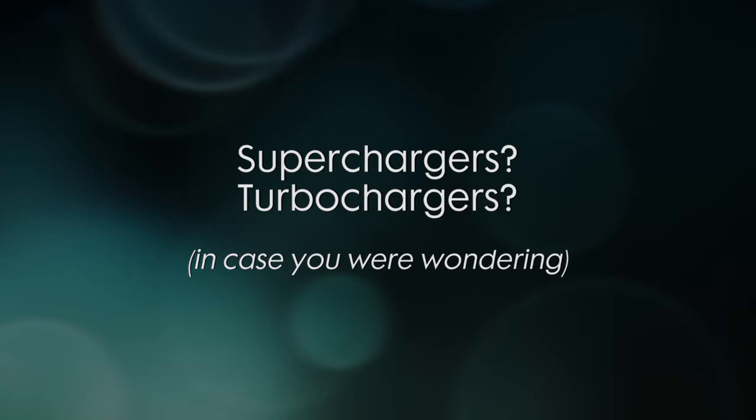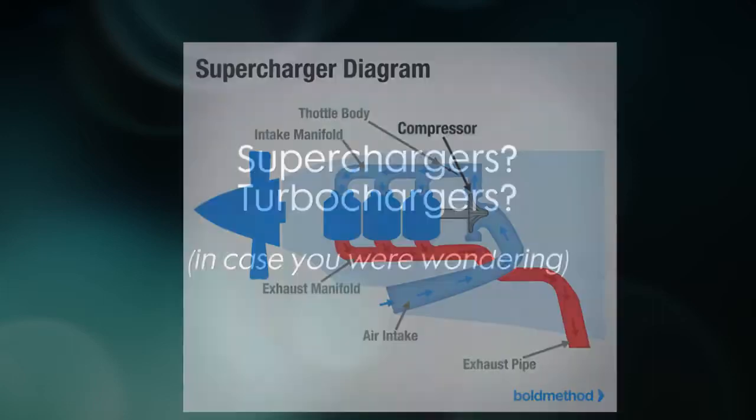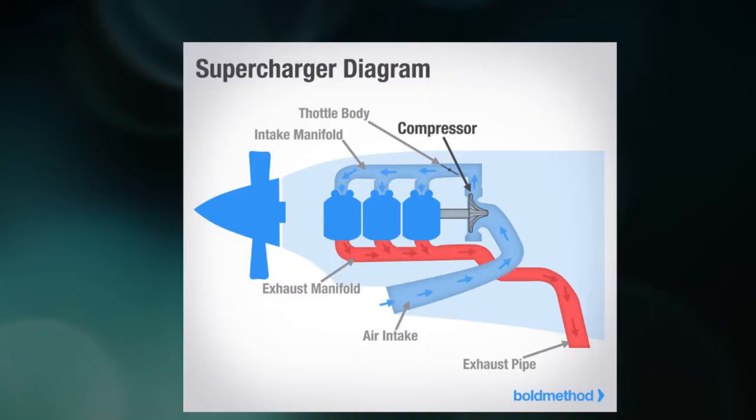Superchargers and turbochargers do the same thing, but they work slightly differently. A supercharger is geared to the engine and so it uses the engine power to spin a turbine that will accelerate and pressurize air. The higher pressure air can mix with a lot more fuel and that adds to the performance. In other words, the airplane feels like it's at a lower altitude where there's a lot more air.